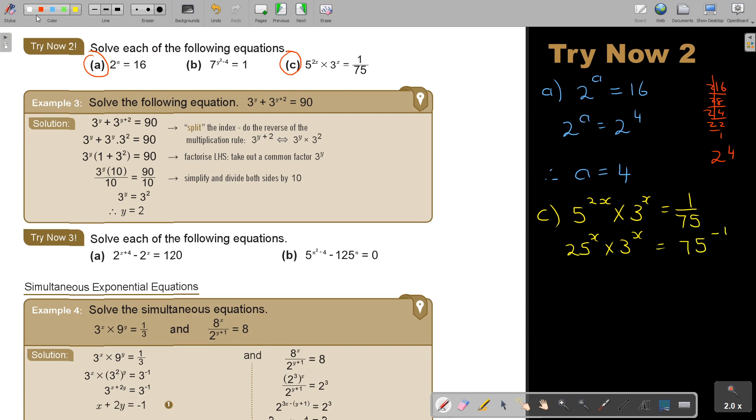Now again, the indices are the same. So I keep the index. And I multiply the bases. So 25 times 3, that will be 75. So therefore, x equals negative 1. And that will be the answer.